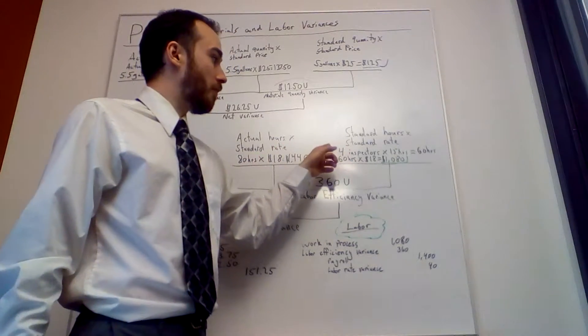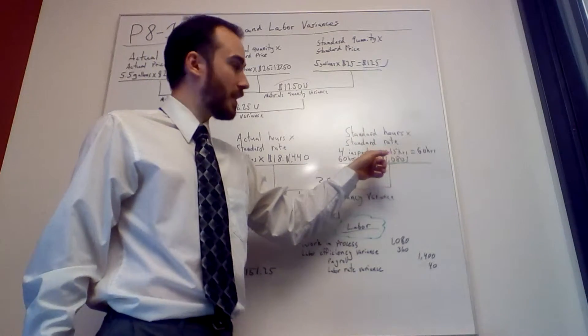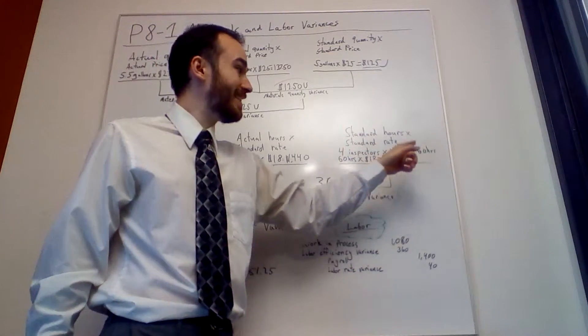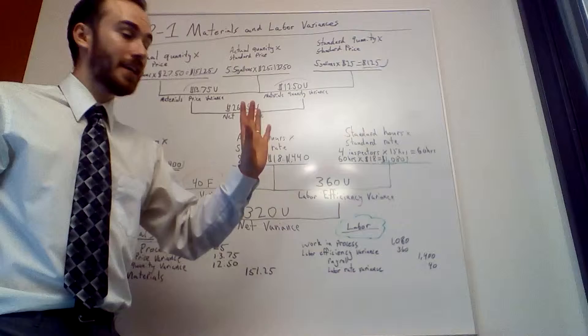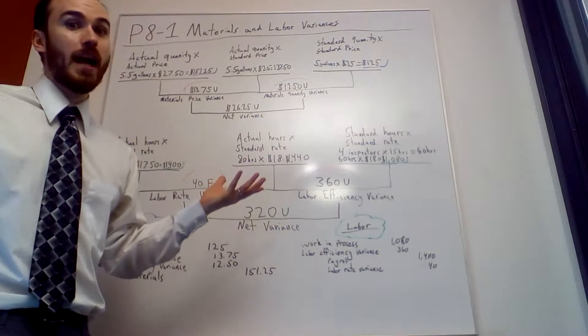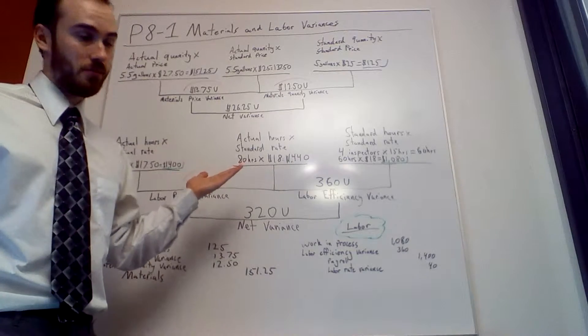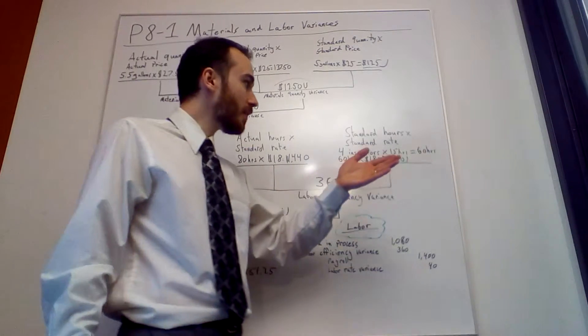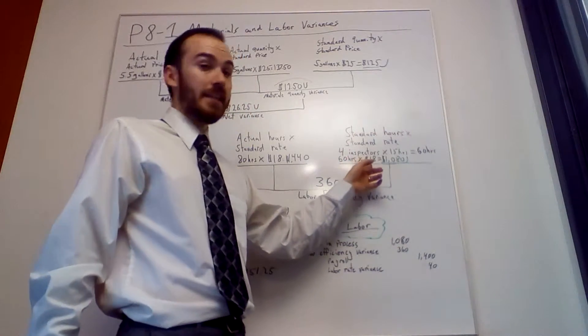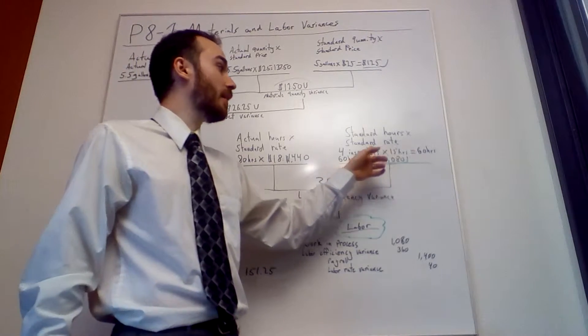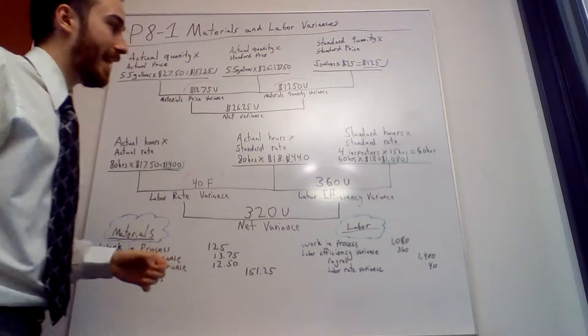Here's the trick. We had four inspectors at 15 hours each. Four times 15 is 60, so that's the hours that should have happened. We actually had five inspectors who all worked 80 hours total, so we went over hours. We have 60 hours times the $18 an hour standard rate, which gives us $1,080.